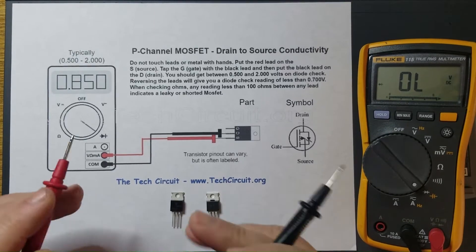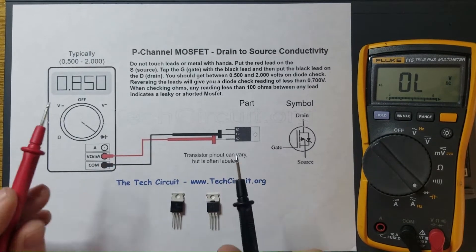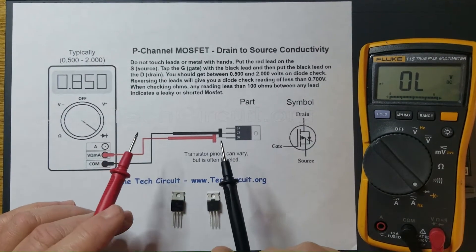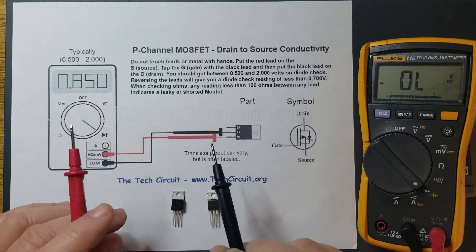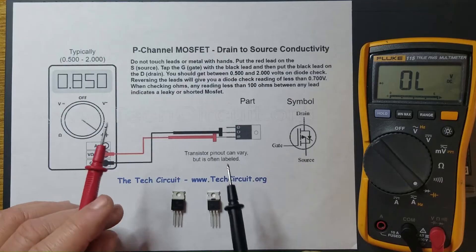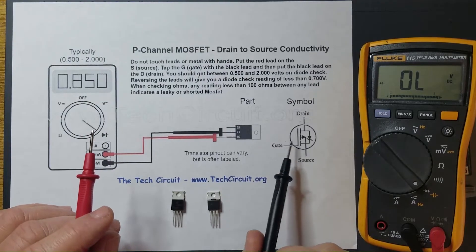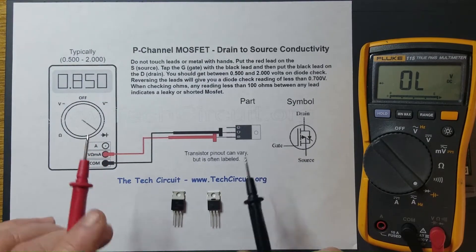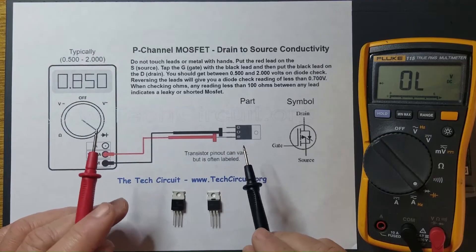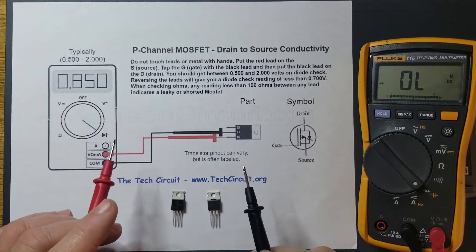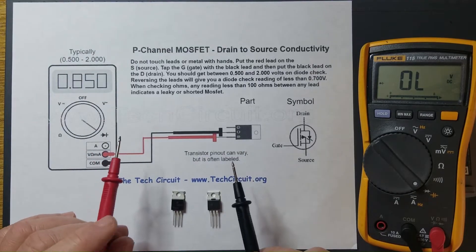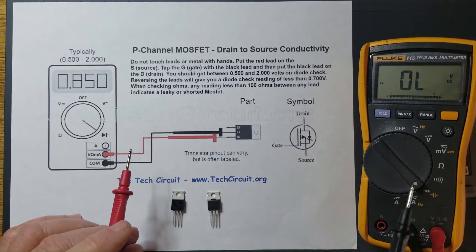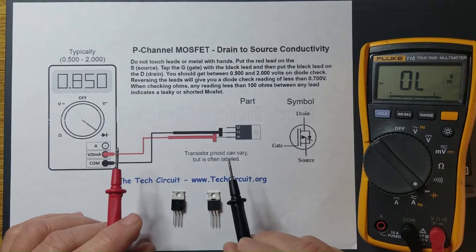In this video, I'll show you how to test MOSFETs with a multimeter. MOSFETs are specialized transistors that have a very high input resistance and must be tested in a very specific way. Fortunately, you can just use a standard multimeter to do so using the diode check function.